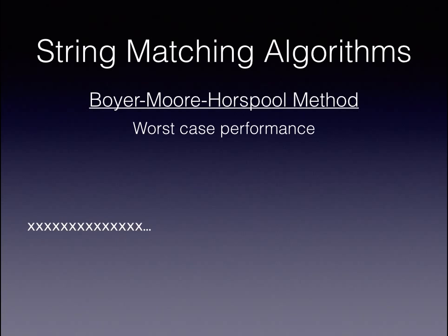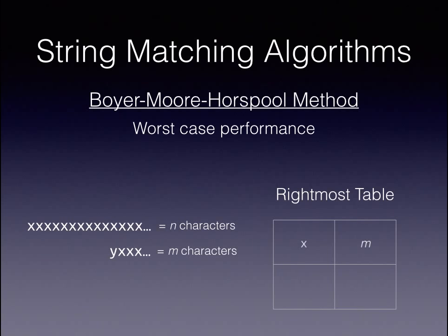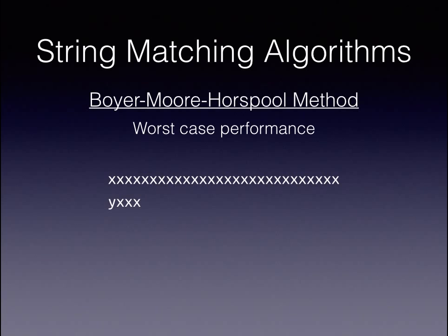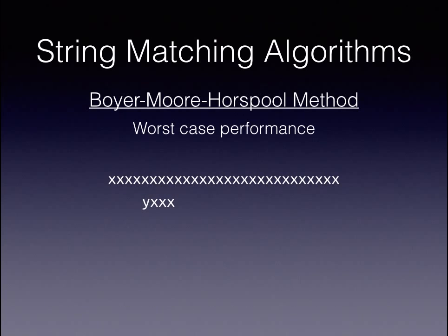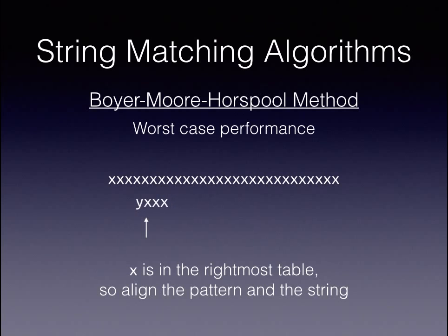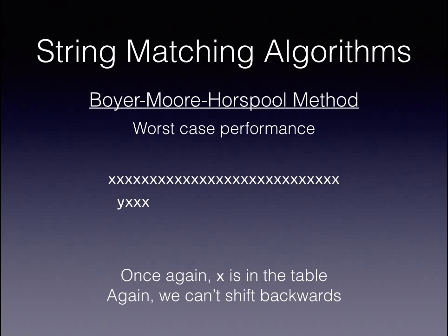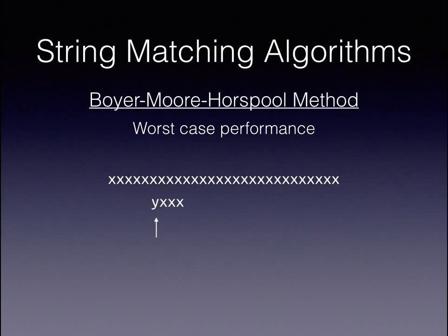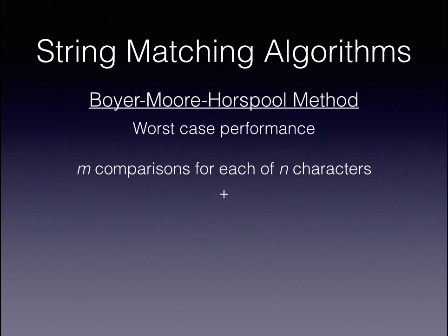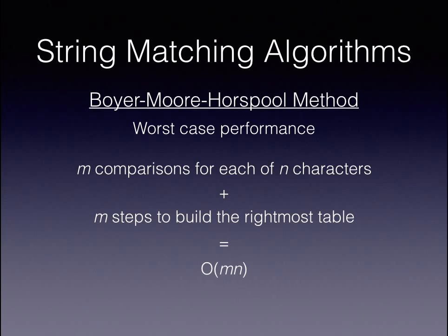For the Boyer-Moore-Horspool method, the worst-case performance comes when you have a string of repeated Xs and a pattern with a Y followed by repeated Xs. This means we build the following rightmost table and perform the following comparisons. We start at the end of the pattern, compare the Xs backwards until we reach the first Y — this is M comparisons. X is in the table, but we can't shift the pattern backwards, so we shift it forwards. We again do M comparisons, compare Y to X, have another mismatch, align using the rightmost table, compare backwards, have a mismatch, shift forwards, and start again. As you can see, this is M comparisons for each of the N characters. We add in the M steps it takes to build the rightmost table, and we have an algorithm that is O(MN).